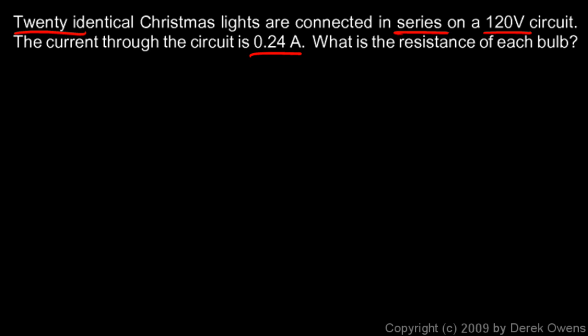We have 20 lights connected in series on a 120 volt circuit, and we're told that the current is 0.24 amps. We're trying to find the resistance of each bulb. So we're going to use Ohm's law here. We know that V equals IR, and that's true for the circuit as a whole and for each individual bulb.